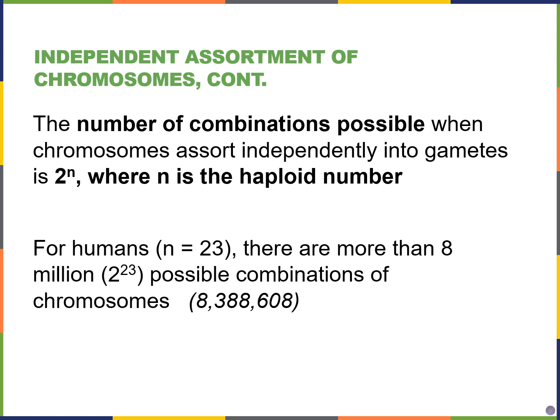If you look at the number of combinations possible for a single cell — for humans, who have 23 pairs of homologous chromosomes — it's 2 to the 23rd power, which gives us more than 8 million combinations for our future daughter cells.